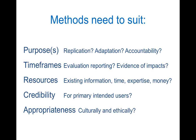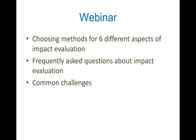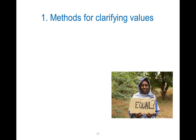Today in the webinar I want to talk about the process of choosing methods for six different aspects of impact evaluation, sketching out what they need to do and what some of the options are. There is more information about these in the guidance note, including links to more detailed information. Please put questions in the box throughout, as we are very keen to hear from you.